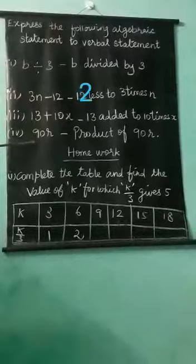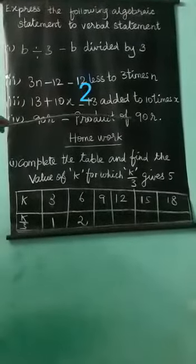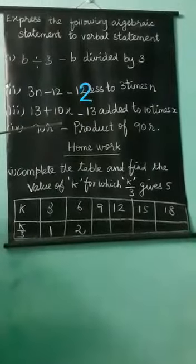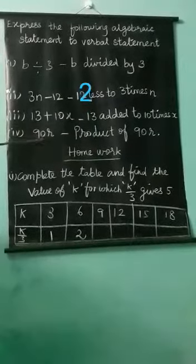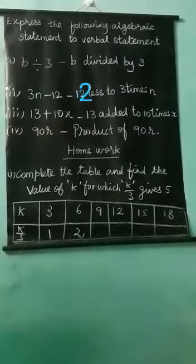Last one, 90R. Product of 90R. Product means multiplication. We multiply 90 into R. So, we write product of 90R. Understood, children?